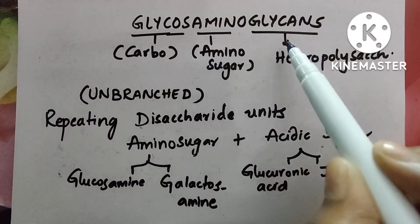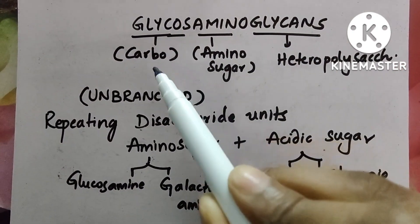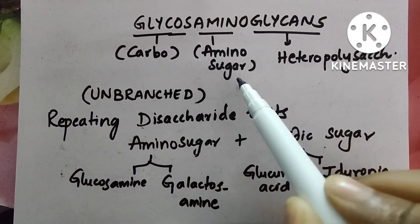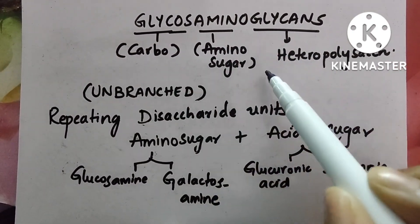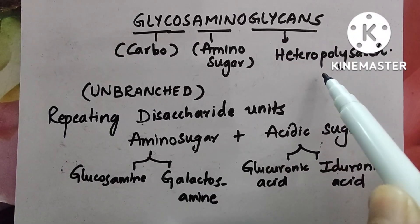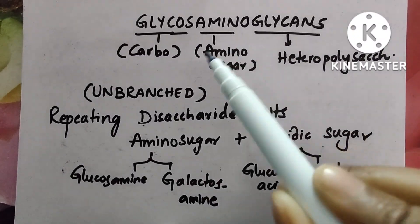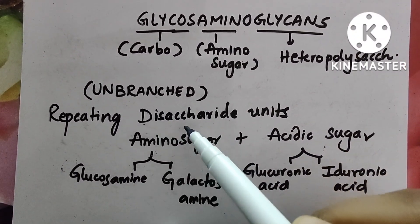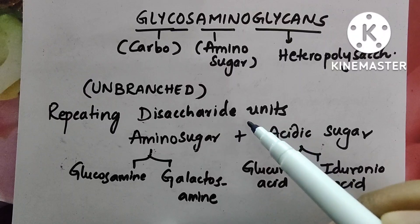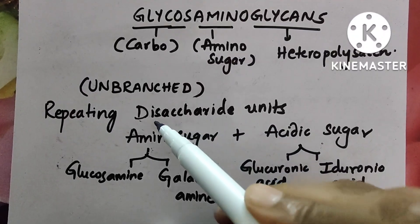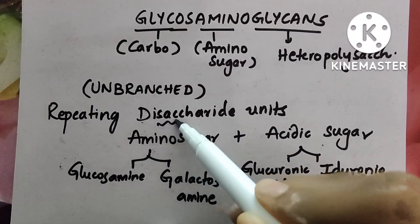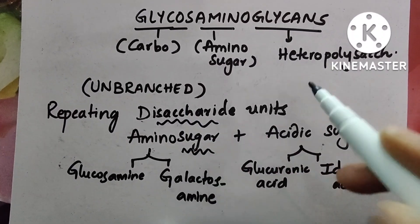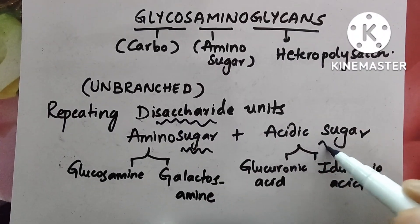Let us discuss about glycosaminoglycans. Glyco means carbo, amino is amino sugar, and glycans is heteropolysaccharide. So these are unbranched structures with repeating disaccharide units. The disaccharide units here are two sugars: one is amino sugar and the other is acidic sugar.